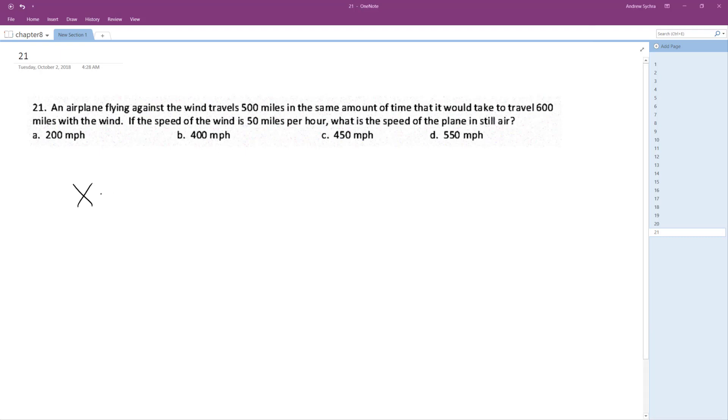So X minus 50... I got it. 500 divided by X minus 50 is the same thing as 600 divided by X plus 50. So we just cross multiply here.